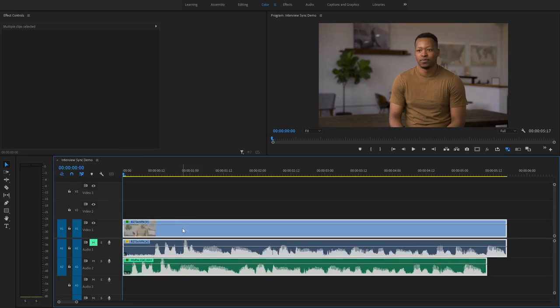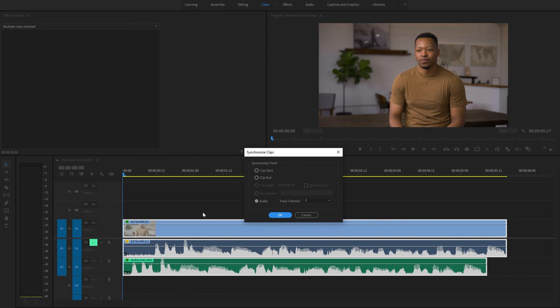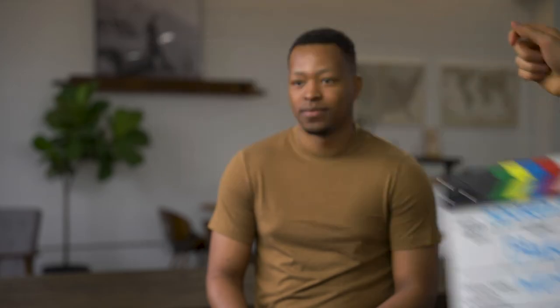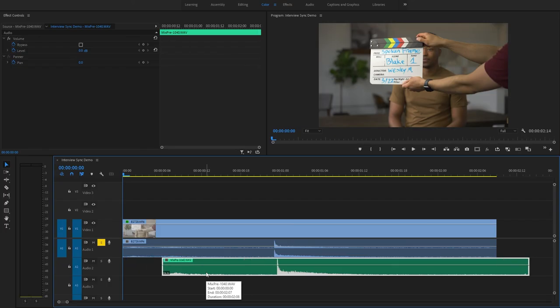When recording audio separately from video, most editing programs can sync the two together automatically. As a backup, you can use a slate or clap your hands to make it easier to sync them manually.